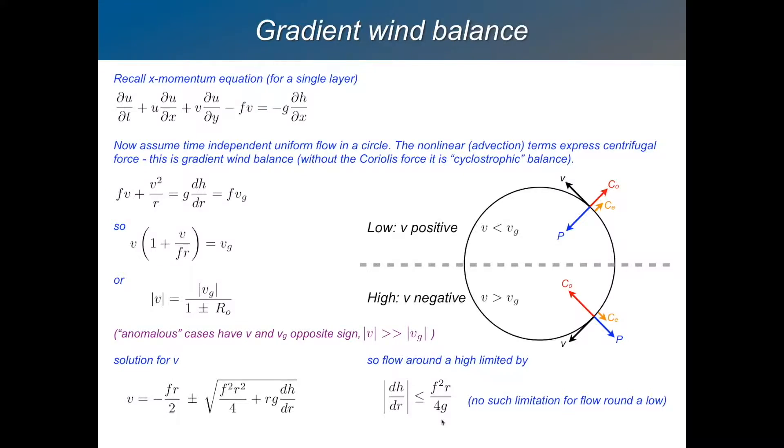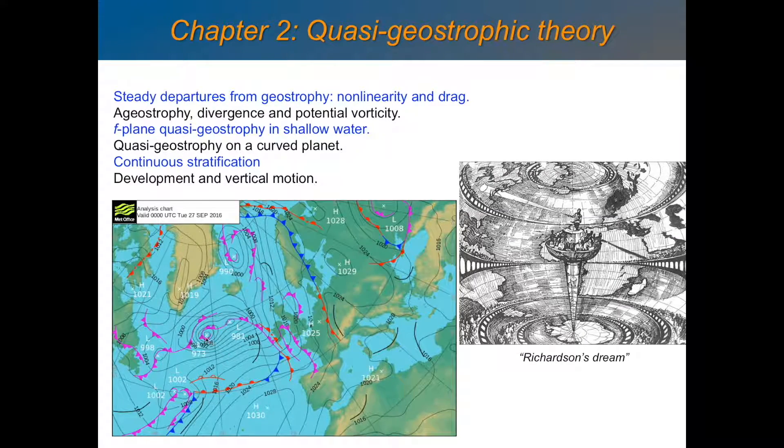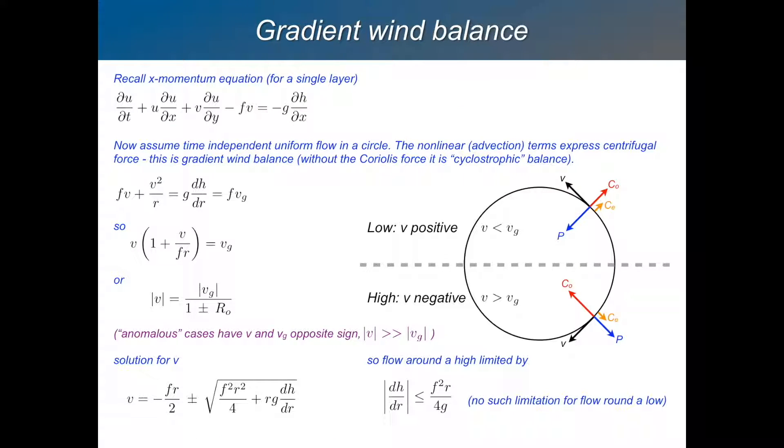I mean, just look at this weather map we had on the previous page. Here's a cyclone. Very intense. Very strong pressure gradient. Here's an anticyclone. Rather weak pressure gradients. A large kind of flat structure. And it's always like that. And that's an asymmetry between high and low pressure which is the result of steady ageostrophic terms. So, that's called gradient wind balance.